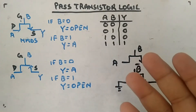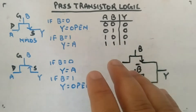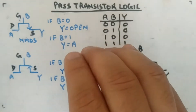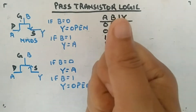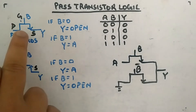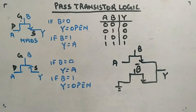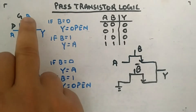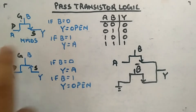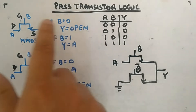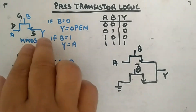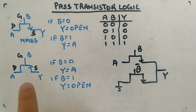Before moving on to transmission gate, I want to show you what pass transistor logic means, because that will be needed to understand transmission gate. Pass transistor logic means it's a transistor which has a passing facility. For NMOS, drain, gate, source: A is the input, B is the controlling input, Y is the output. If B is 0, Y is open — A is not connected to Y. If B is 1, A is connected to Y. It acts like a switch: B=0 means open, B=1 means closed.